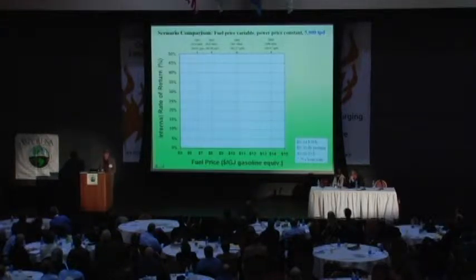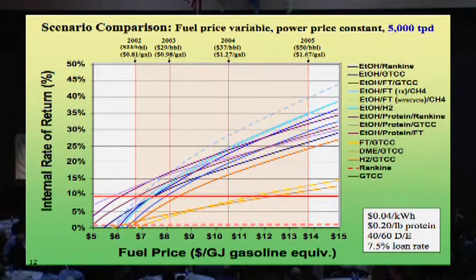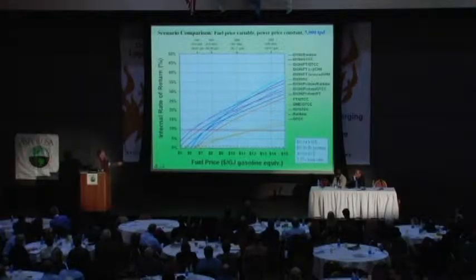In terms of economics, this is the price that you're selling into the fuel market, calibrated in terms of dollars per barrel as well as wholesale gasoline price, and internal rate of return. The dedicated power options have modest internal rates of return. The thermochemical fuel options without a biological step — obviously their economics improve as the world is willing to pay more for fuel — but the ones that come out the best in this exercise are the biological options.